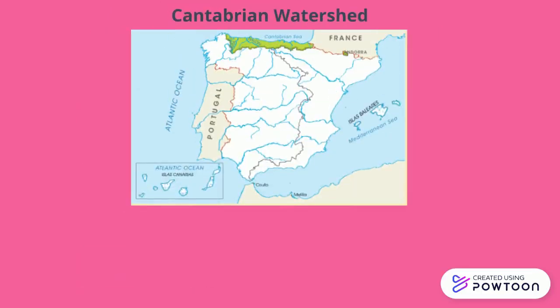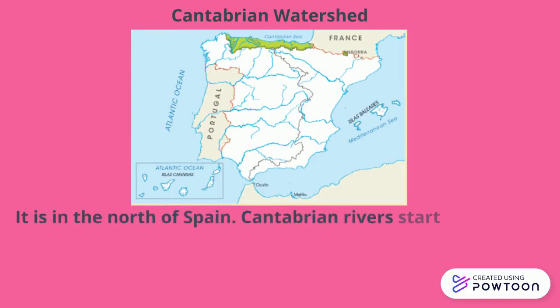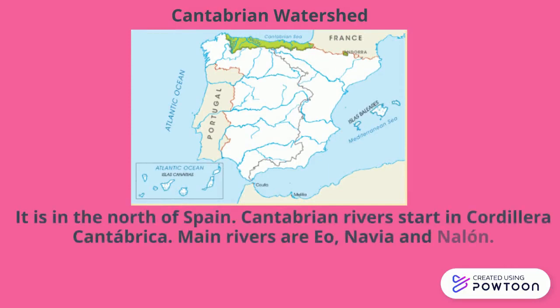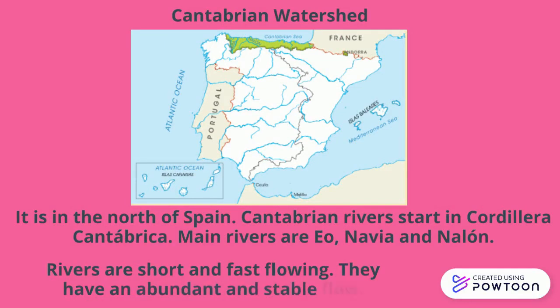Cantabrian watershed. As you can see, it is in the north of Spain. Cantabrian rivers start in the Cordillera Cantábrica. Main rivers are Eo, Navia, and Nalón. Rivers are short and fast flowing, and they have an abundant and stable flow.